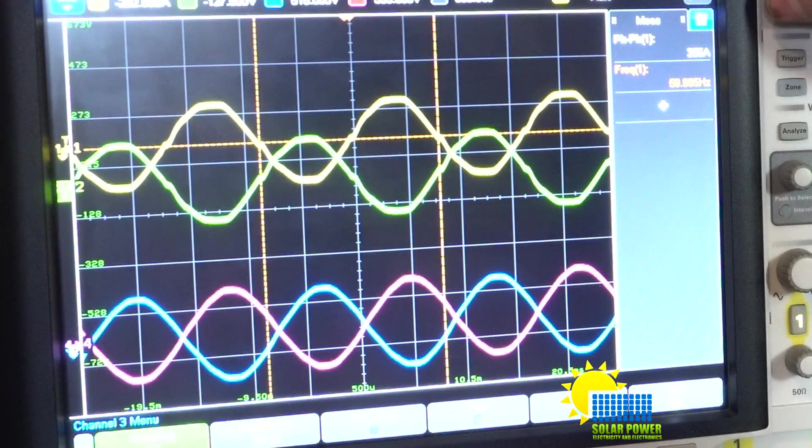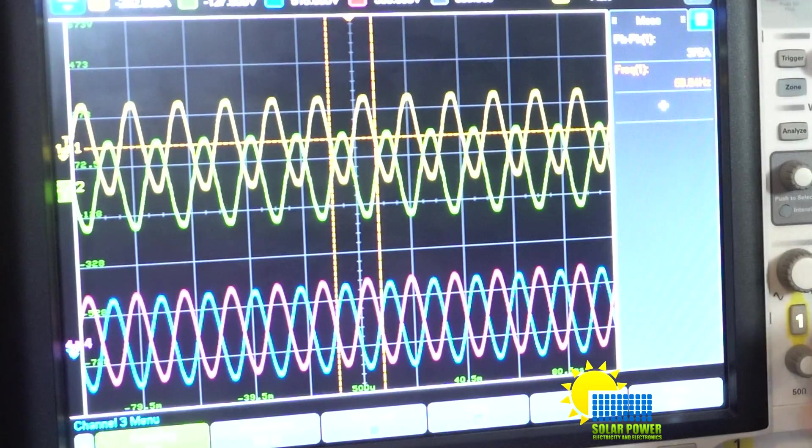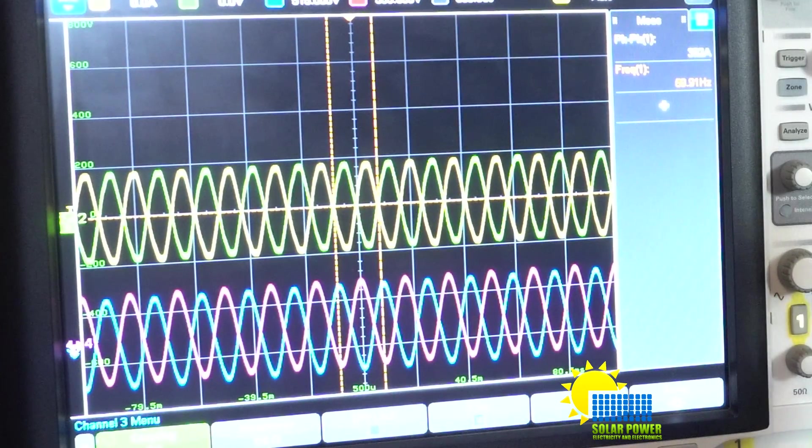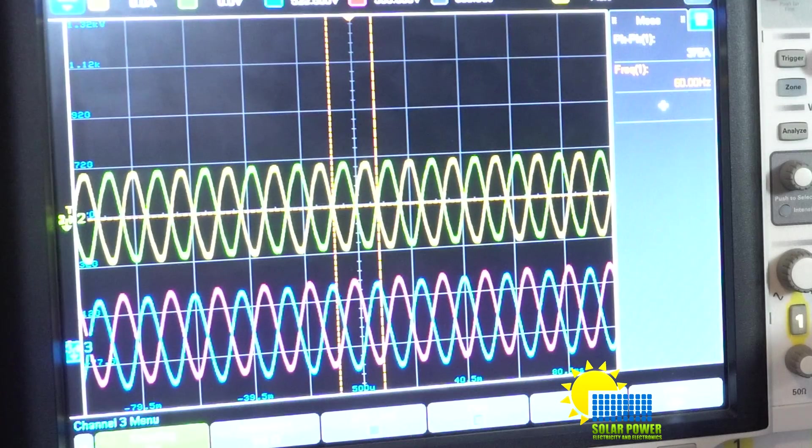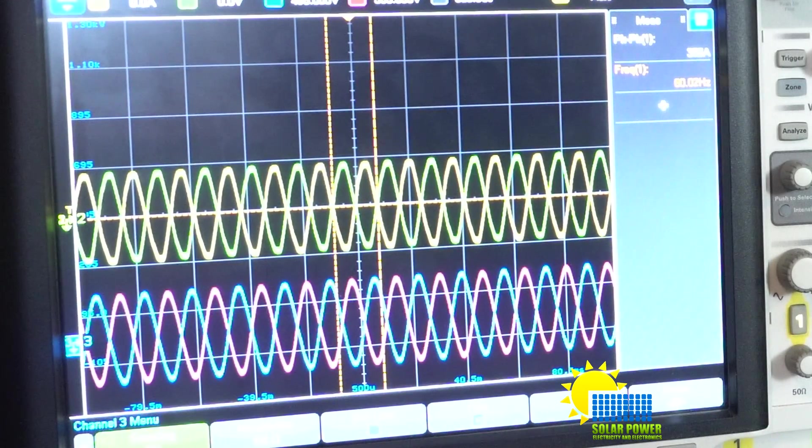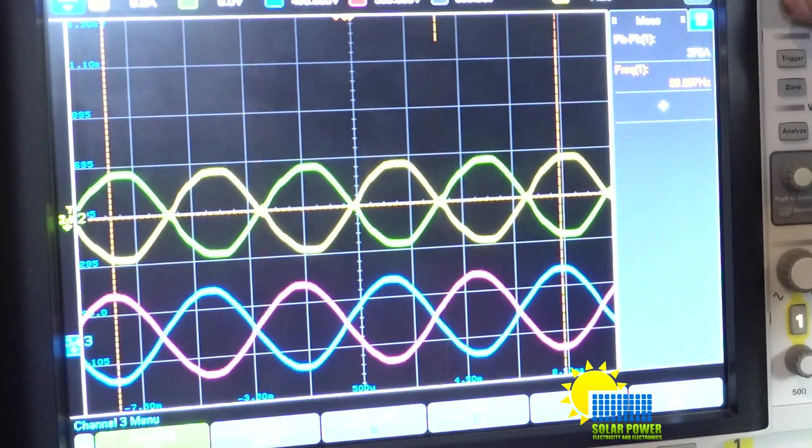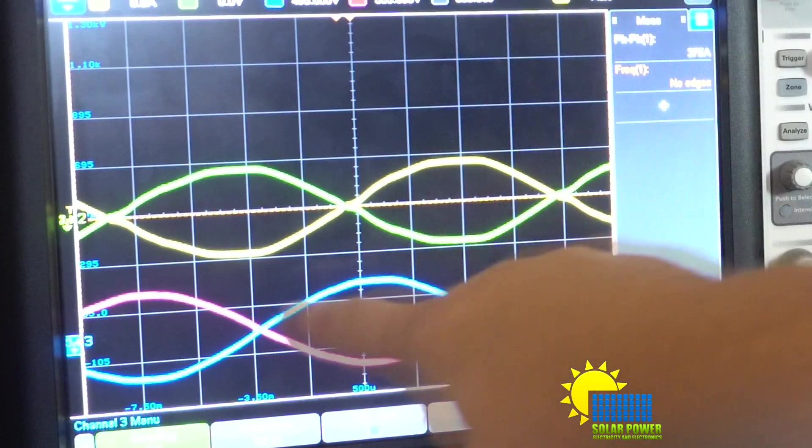It is still there again but the sine wave is way cleaner with a 1000 watt load. Now if we zoom out you can get a really good picture, it's a pretty clean sine wave. But if you zoom in you can see it's not as clean as grid power.